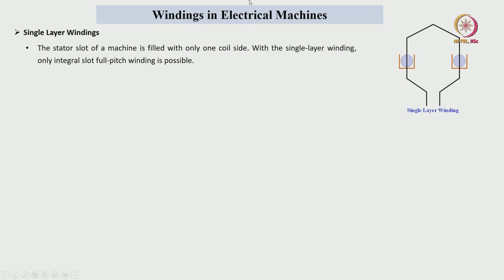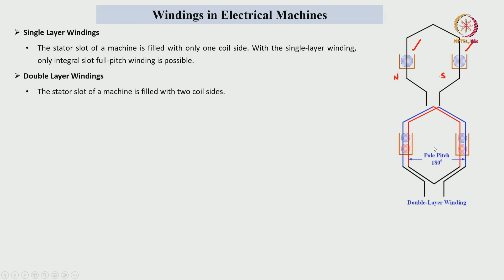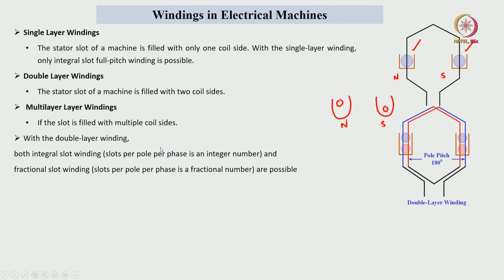In single layer winding, each slot consists of one coil side — one coil side under the north pole and one under the south pole. In double layer windings, each slot consists of two coil sides: the blue color at the top side and the red color at the bottom side. To make the winding symmetrical, the top side conductor is always connected to the bottom side conductor under the south pole. This minimizes leakage flux and achieves symmetrical winding distribution.